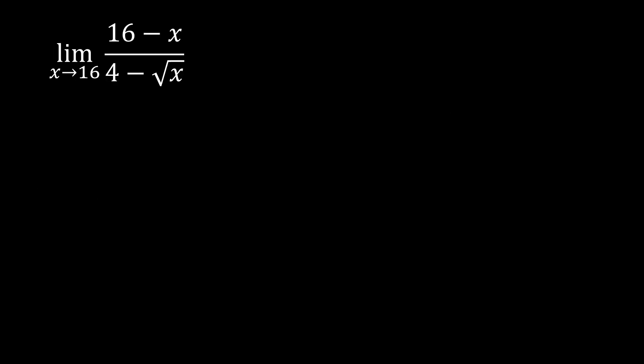The next example: the limit of 16 minus x over 4 minus the square root of x, as x approaches 16. Let's check whether direct substitution works. Substituting x = 16: we get 16 minus 16 over 4 minus the square root of 16, which is 0 over 4 minus 4, giving 0/0. We have an indeterminate form, so we need to manipulate the function.